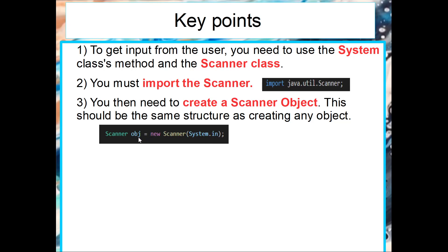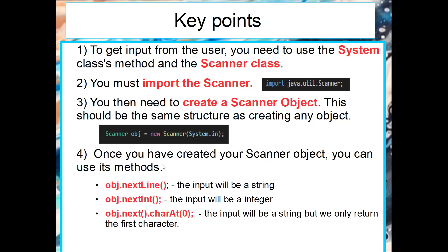Once we've created that Scanner object we can start using its methods to get information from the user. If we wanted to get a String from the user we would say object.nextLine(). If we wanted to get an integer we would say object.nextInt(). If we wanted to get a single character we would say object.next() and then specify from which position we want that character from the string.